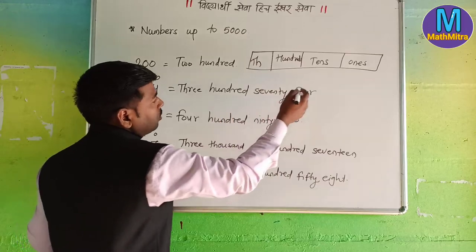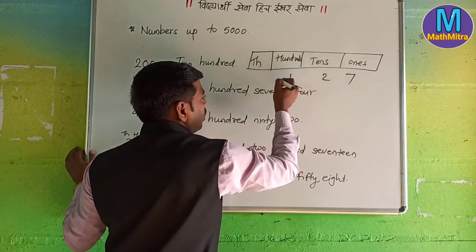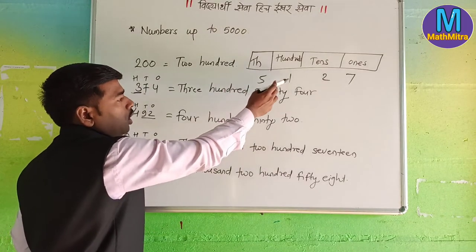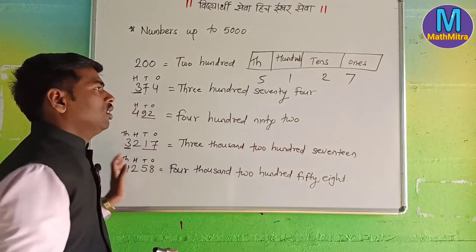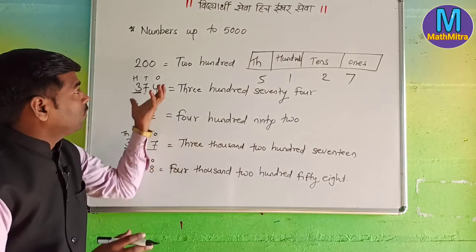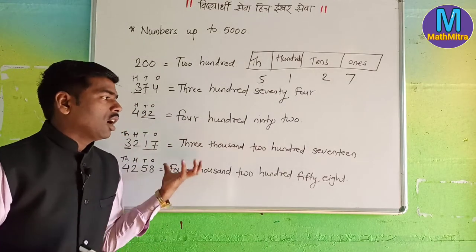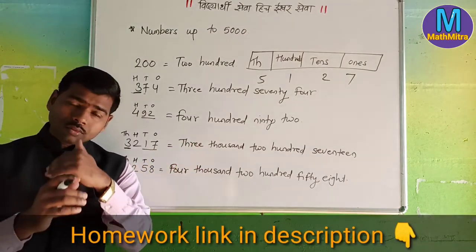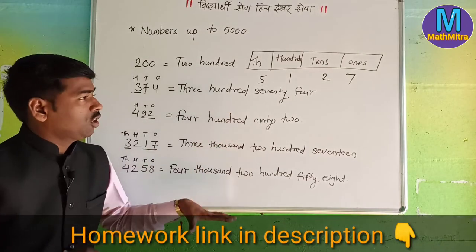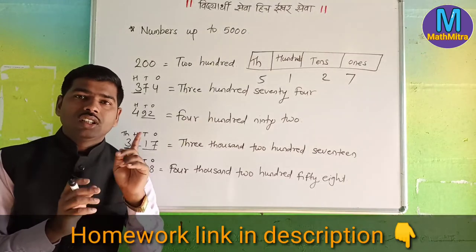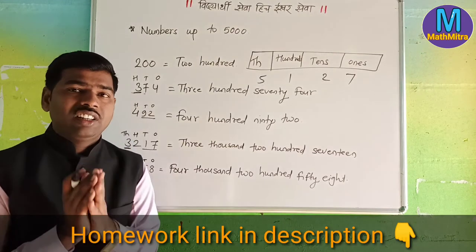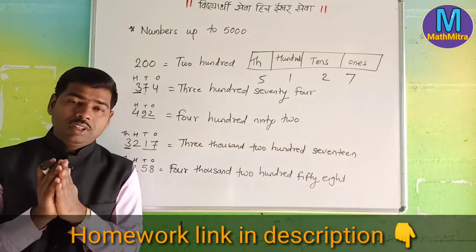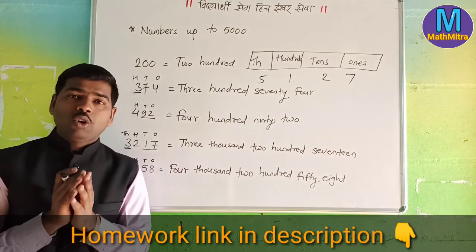The number given here is 7, 2, 1, 5. How can you write this? Five thousand, one hundred, seventy — then seventeen. So this number is 5217. Between seven and the other digits, you can identify each place value.